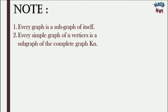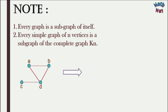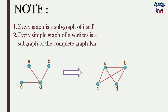Number two: every simple graph of n vertices is a subgraph of the complete graph Kn. The complete graph is a graph where every pair of vertices is connected through an edge. Consider a simple graph — its complete graph connects every vertex. Comparing them using the subgraph conditions, every vertex and edge in the first graph is present in the complete graph, and all edges have the same end vertices. Hence every simple graph of n vertices is a subgraph of the complete graph Kn.